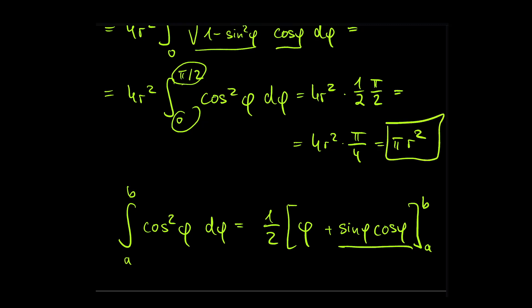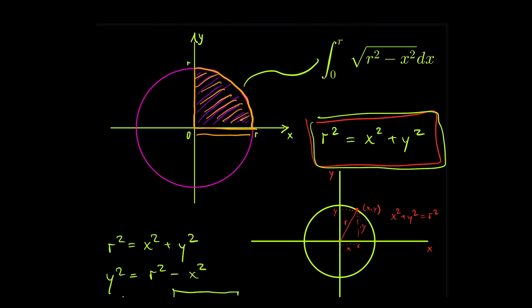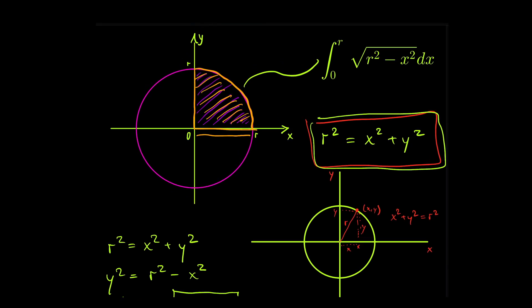And here we are — this is the solution to the integral. This is the area of a circle: pi r squared. It's absolutely amazing. We just performed some very simple substitution integration and derived a very beautiful, simple formula.